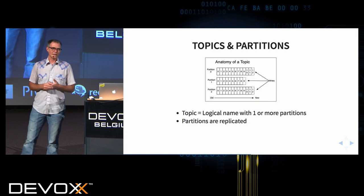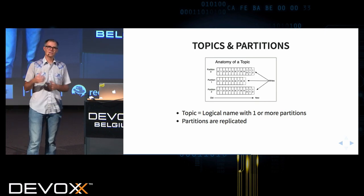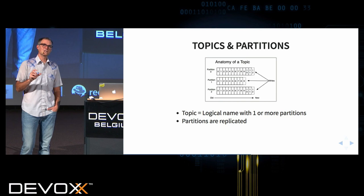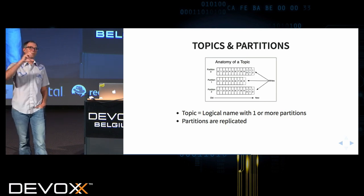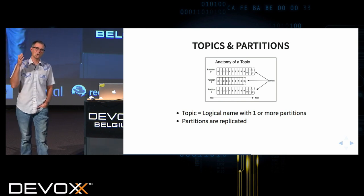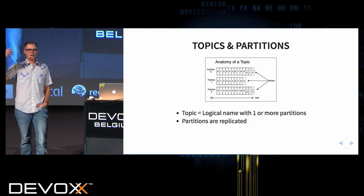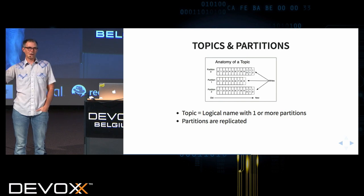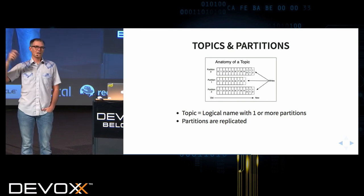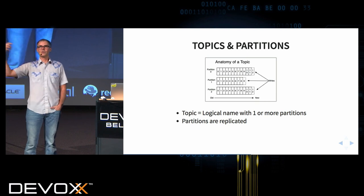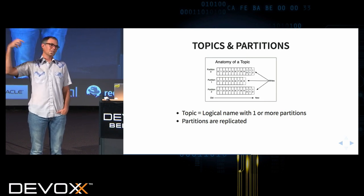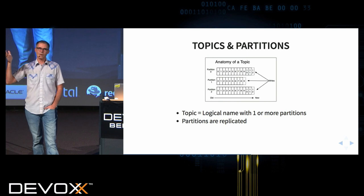Partitions are replicated. In the Kafka cluster, a partition will not exist on just a single machine — usually a partition will actually be copied across multiple nodes based on your replication settings. If I'm publishing messages to a partition on a node and that node goes down, followers will have all the data for that partition. A new leader will get elected, and you can continue writing to that partition seamlessly.